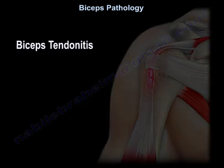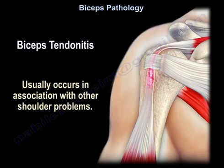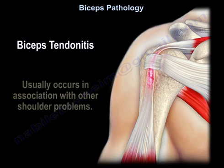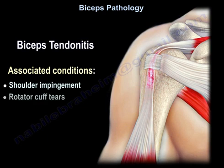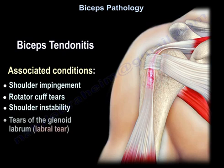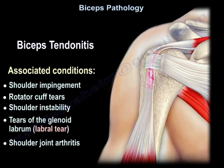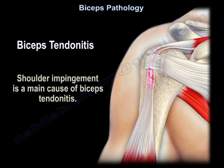Biceps tendonitis usually occurs in association with other shoulder problems — that is very important — such as shoulder impingement, rotator cuff tears, shoulder instability, tears of the glenoid labrum, and shoulder joint arthritis. Shoulder impingement is the main cause of biceps tendonitis.